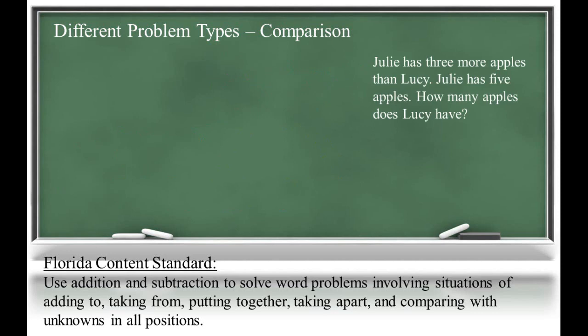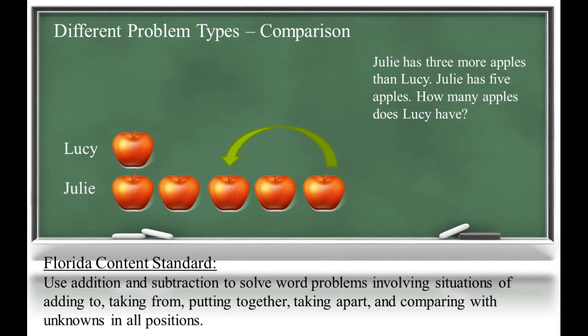In the last problem, Julie has three more apples than Lucy. Julie has five apples. How many apples does Lucy have? In this problem, we know Julie has five apples, which is three more than Lucy has. So students work backwards to find out that Lucy must have two apples.